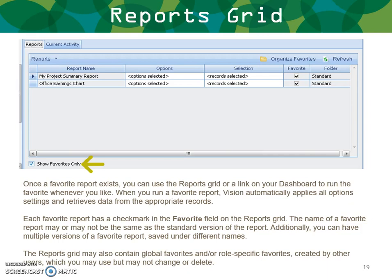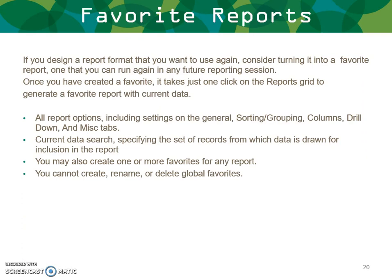Once a favorite report exists, you can use the report grid or a dashboard link to run it whenever you'd like. When you run a favorite report, Vision automatically applies all the options and settings and retrieves data from the appropriate records. Each favorite report has a checkmark in the favorite field on the reports grid. The name may or may not match the standard version of the report. You can have multiple versions saved under different names, and it takes just one click on the report grid to generate a favorite report with current data.